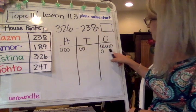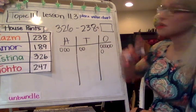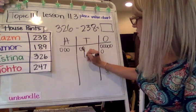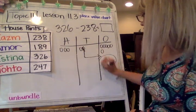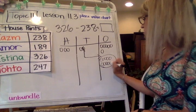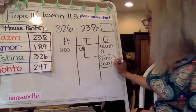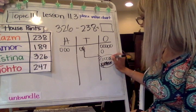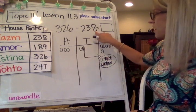So 326, I'm going to take away 238. I'm going to start by taking away 8 from the ones, but I only have 6. I have to unbundle. 1, 2, 3, 4, 5, 6, 7, 8, 9, 10. Now I can take away my 8. 4, 5, 6, 7, and 8. So we've taken away our 8.